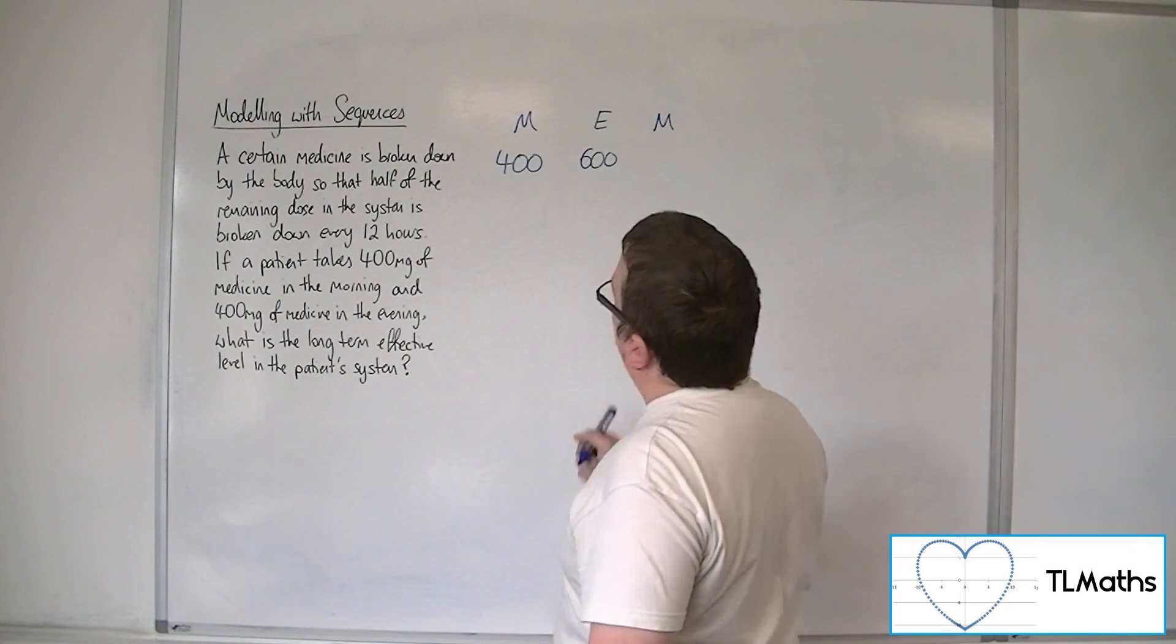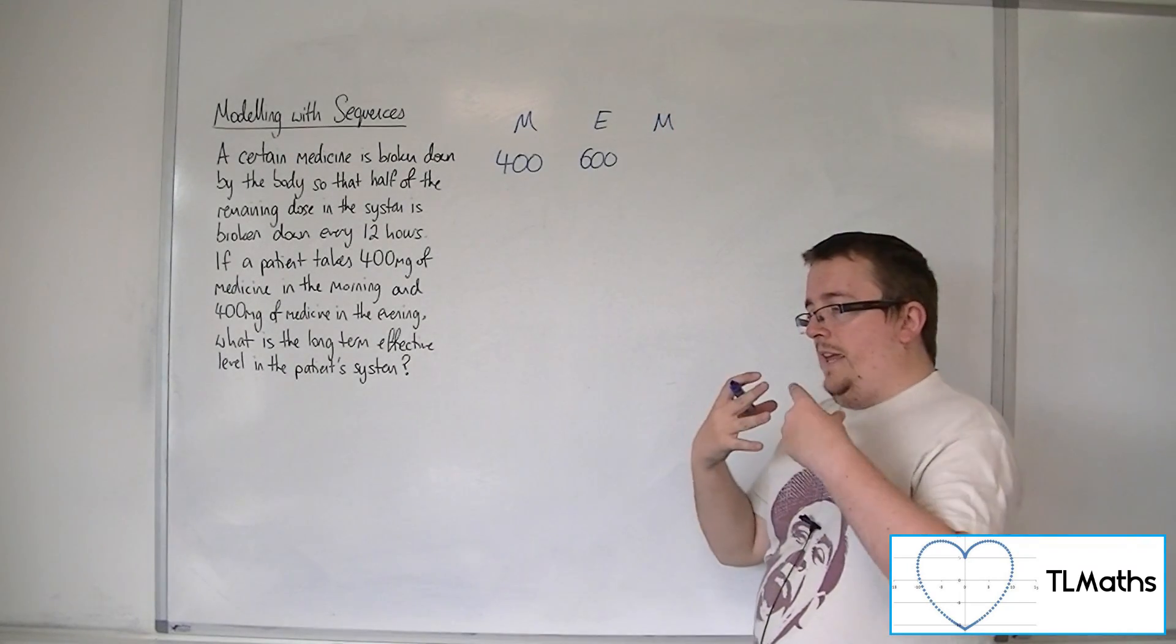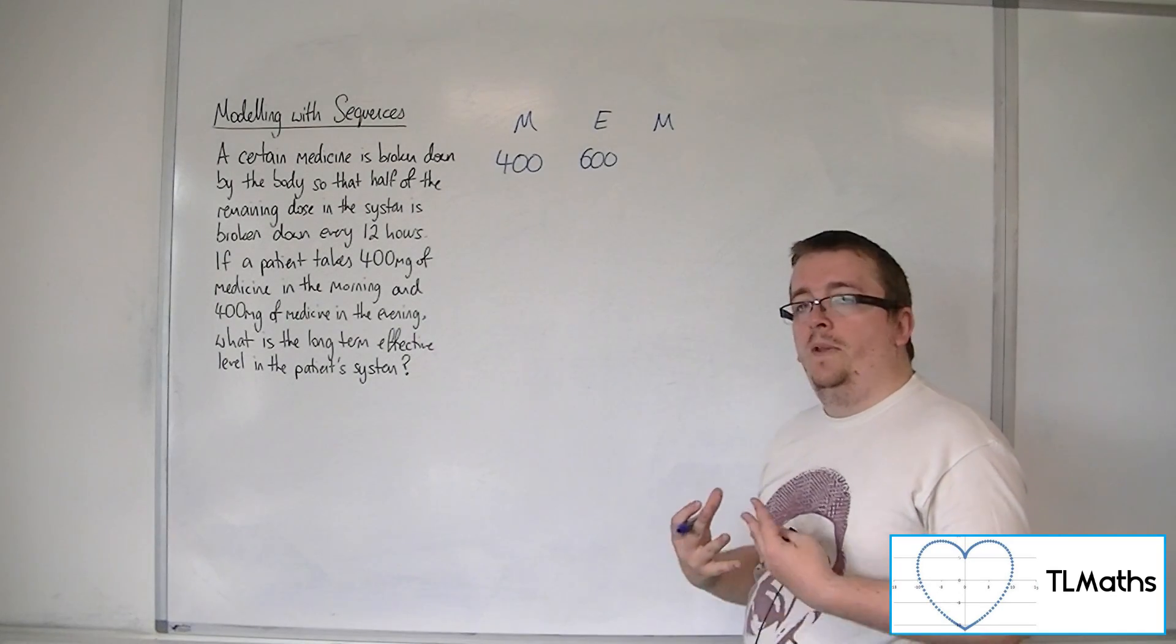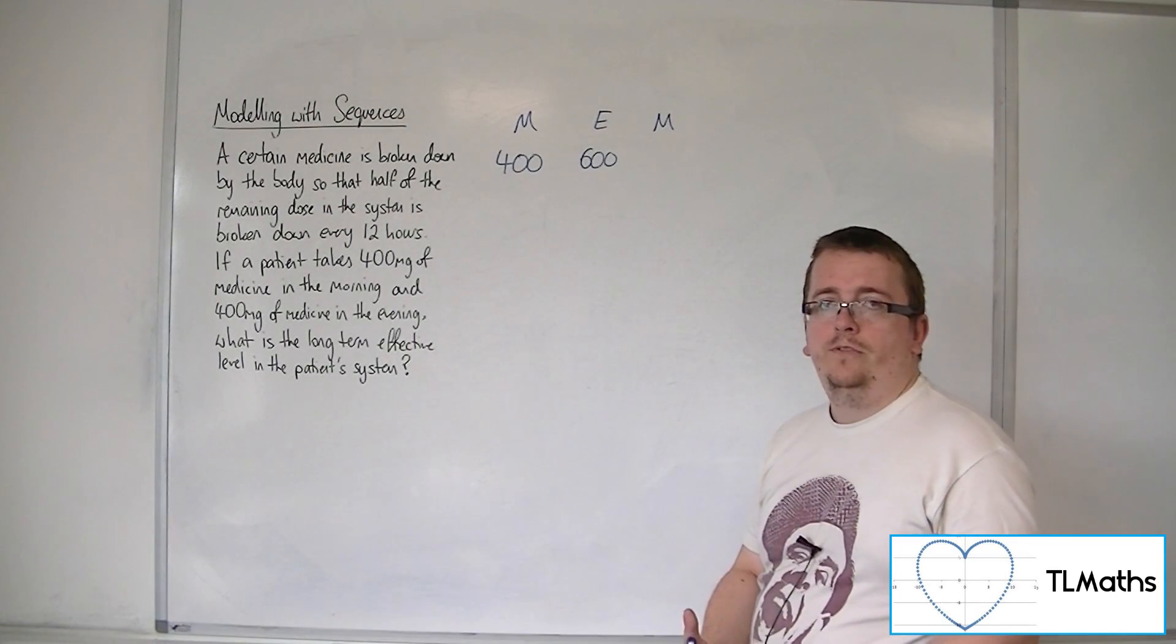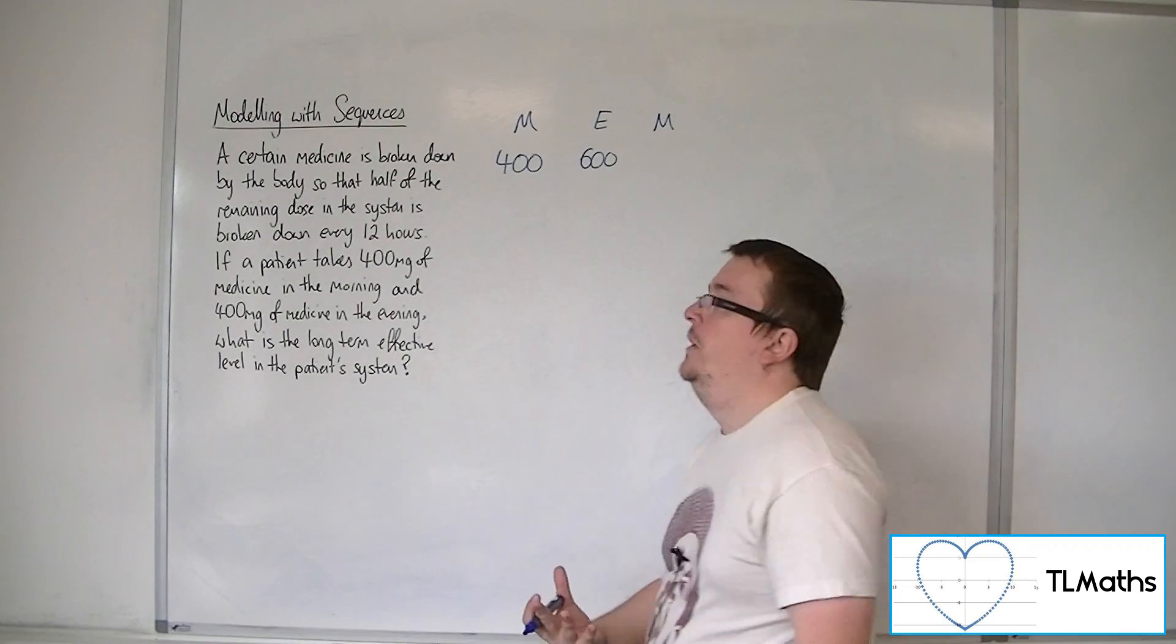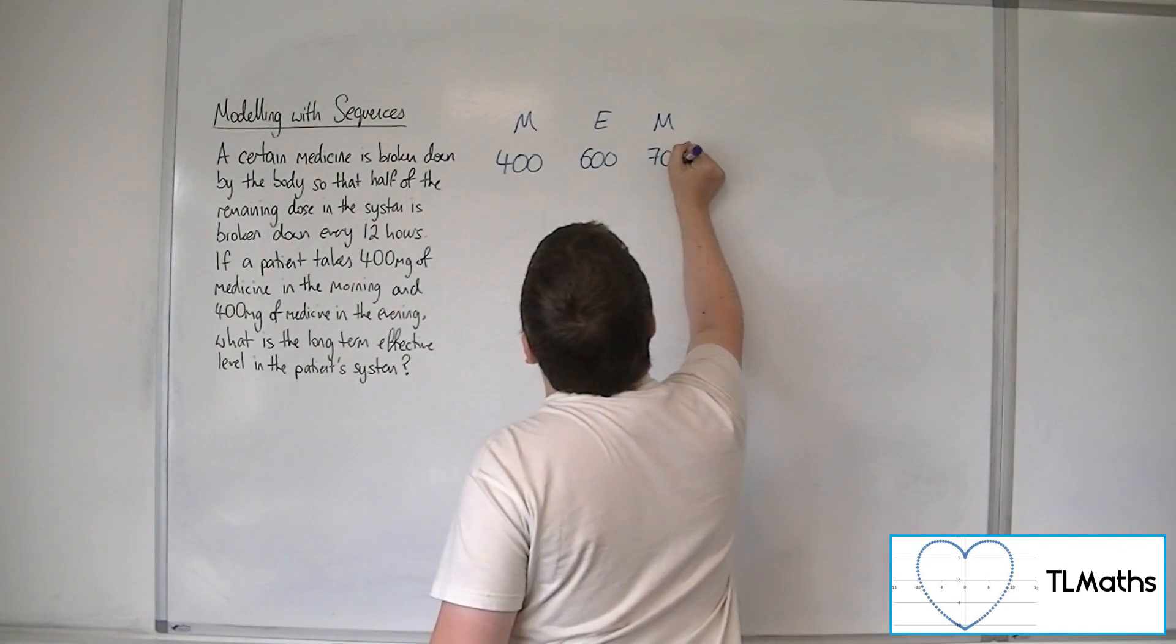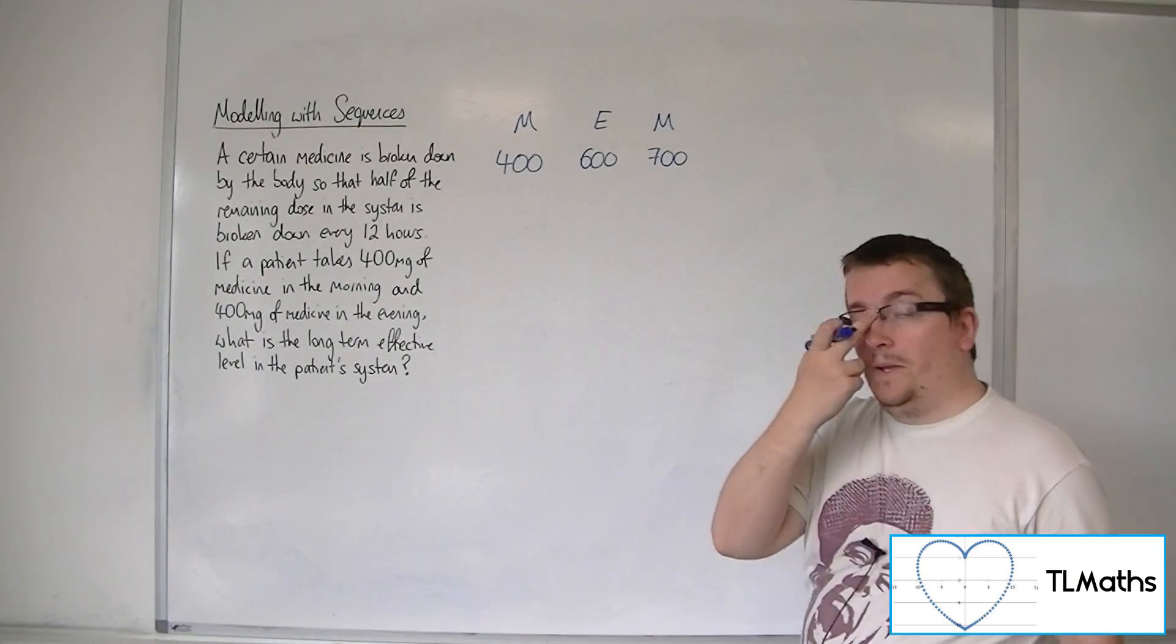12 hours later, the level that they did have in the evening, 600mg, has been halved. It's down to 300mg, but they have another dose. So, 300mg plus the 400mg makes 700mg, okay?